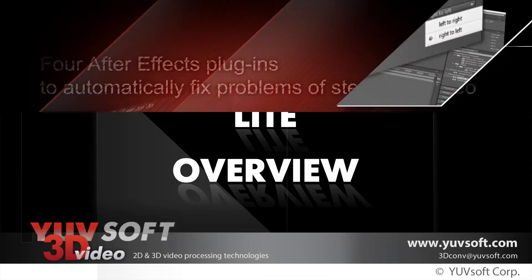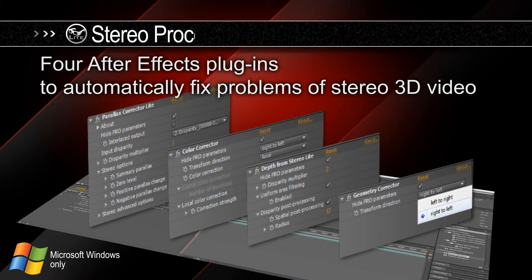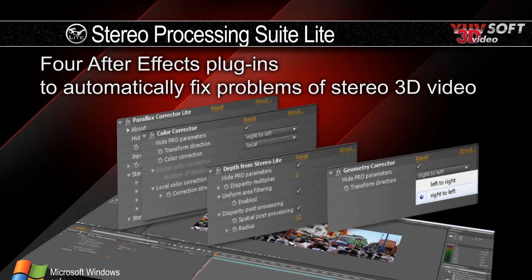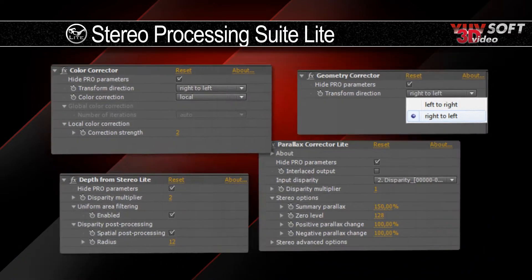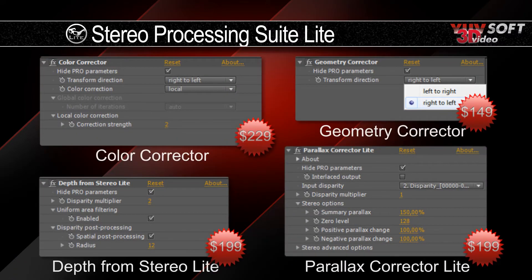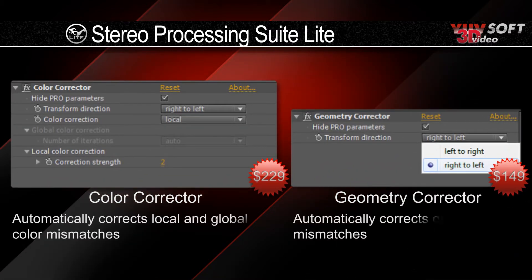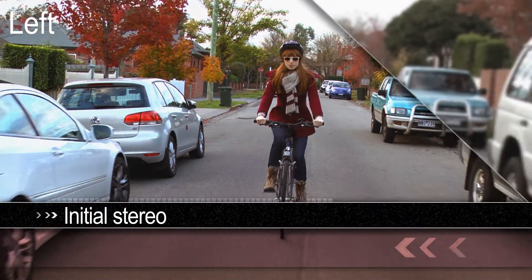If you have ever worked with stereoscopic 3D, you know that it's almost impossible to shoot without any artifacts. Stereo Processing Suite Lite is a collection of four very easy to use After Effects plugins that will fix these common problems. Let's start with the Color Corrector and Geometry Corrector plugins to automatically correct color and geometry mismatches.